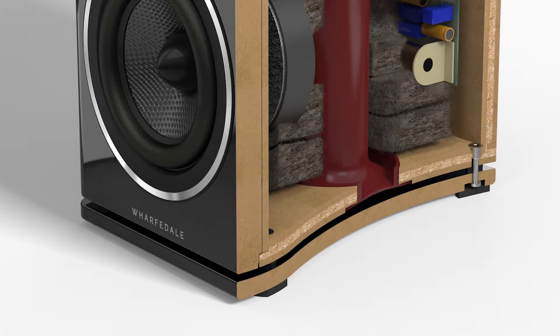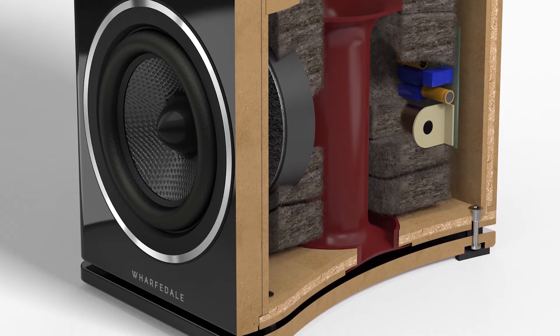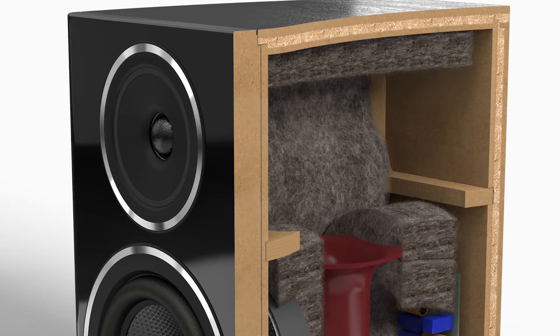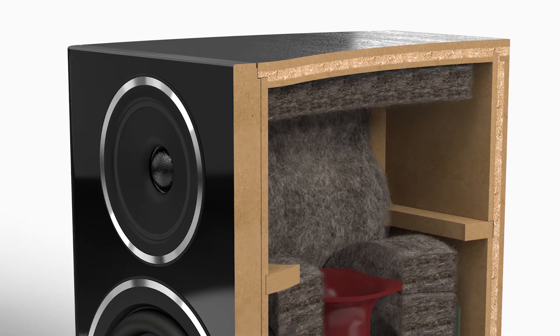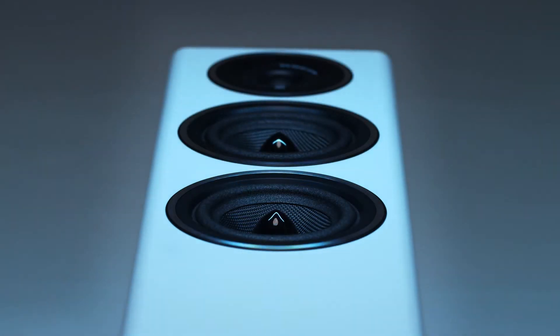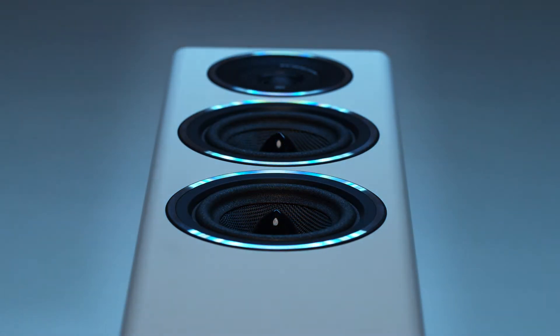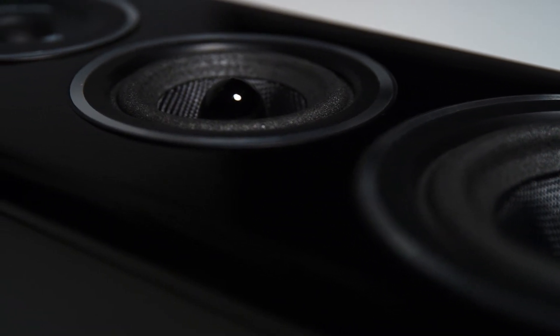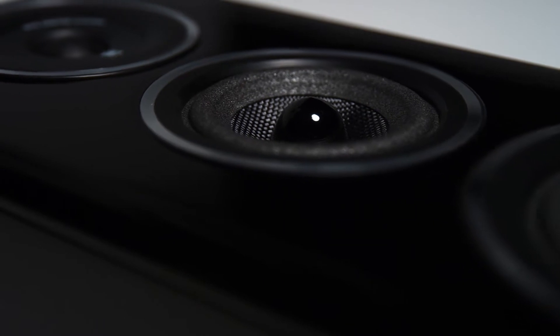In addition, the cabinet walls are lined with a specially developed internal fiber, and that's been chosen because of its outstanding absorbent qualities across a wide bandwidth. The result is that you, the listener, hear the drive unit output unsullied by unwanted colorations caused by panel vibration or internal resonances, revealing more of the detail of the musical performance.